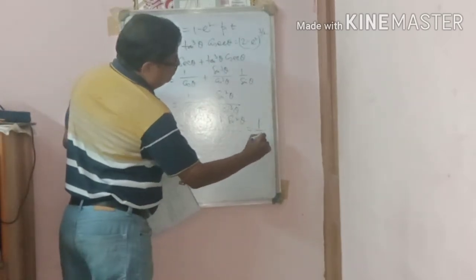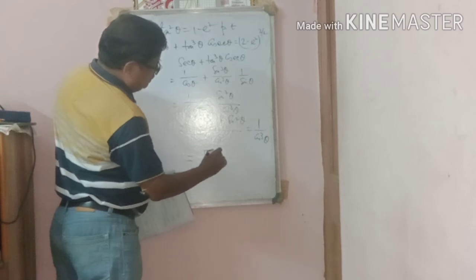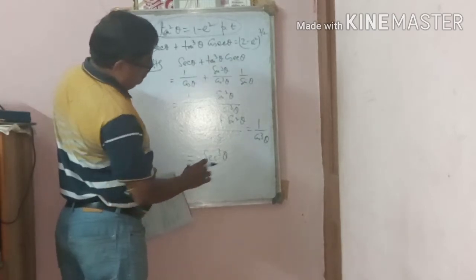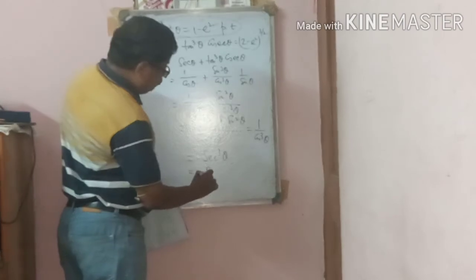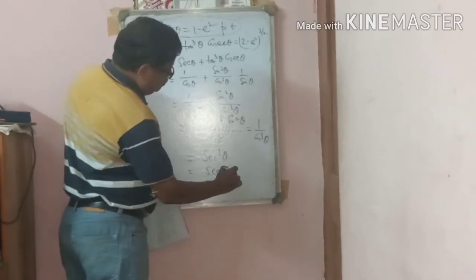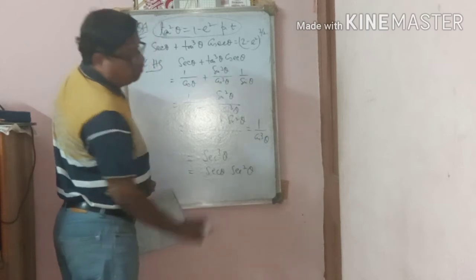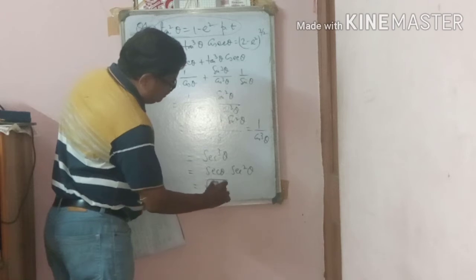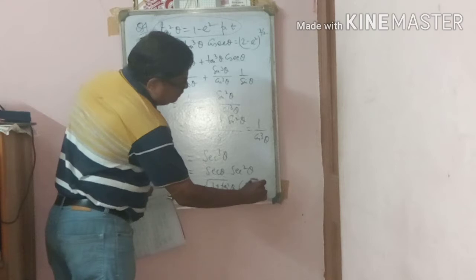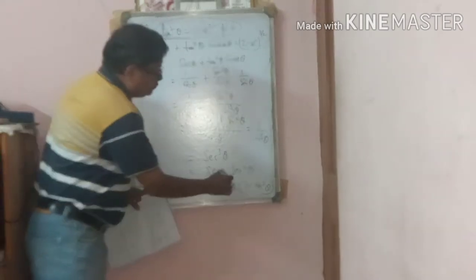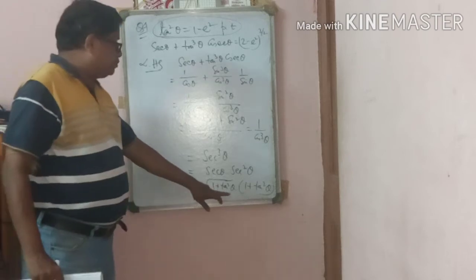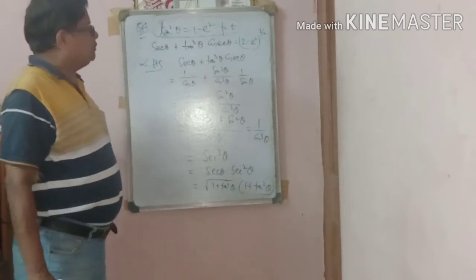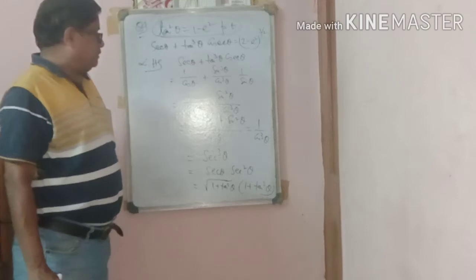So LHS = sec³θ = secθ · sec²θ. Now sec²θ = 1 + tan²θ, so secθ = √(1 + tan²θ) and sec²θ = 1 + tan²θ. The whole expression becomes (1 + tan²θ)^(3/2). Substituting tan²θ = 1 − a²: (1 + 1 − a²)^(3/2) = (2 − a²)^(3/2).